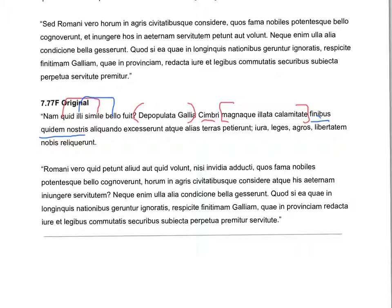Finibus quidam nostris goes together. Nostris here is an adjective modifying finibus. Ex caserant is the main verb that goes with the cimbri. Atque alias teras peti errant — atque is a connector linking the two things the cimbri did: ex caserant and peti errant. Notice alias teras is a noun-adjective pair. With that ginormous catastrophe having been taken away, the cimbri left from our borders.